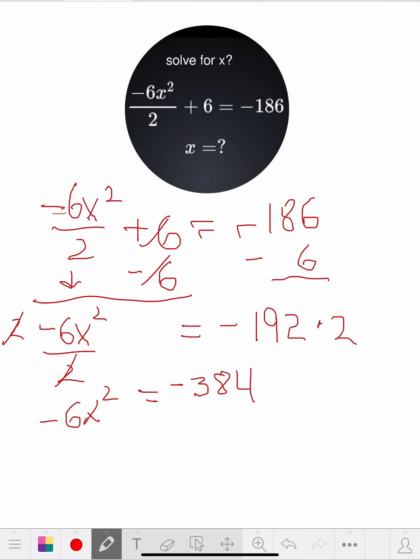Now we've got negative 6x squared, so that's negative 6 times x squared. What's the opposite of that? I divide by negative 6. What we do to one side, we've got to do to the other side. These two cross each other out. The x squared comes down. Now it equals 384 divided by 6, and it's going to be a positive because it's a negative divided by a negative.